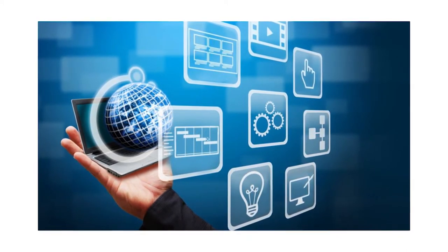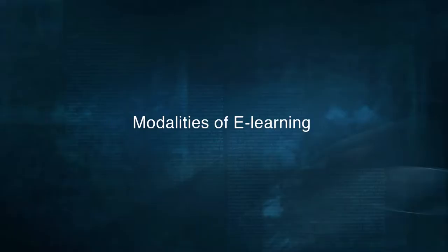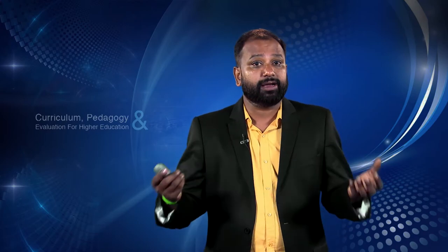E-learning is commonly referred to as the intentional use of network information and communication technology in teaching and learning. The letter 'e' in e-learning stands for 'electronic.' E-learning incorporates all educational activities carried out by individuals or groups working online or offline, synchronously or asynchronously, via networked or standalone computers and other electronic devices. These various modalities of e-learning are represented in four ways. The first is individualized self-paced e-learning online, which refers to a situation where an individual learner is accessing learning resources such as a database or course content via an intranet or the internet.